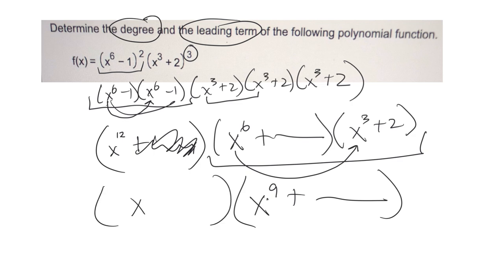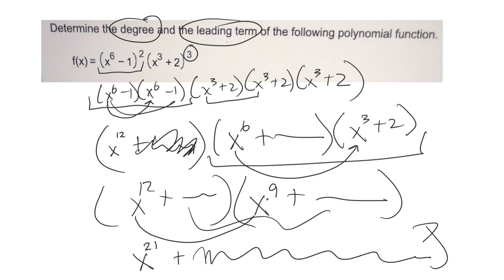And then on the front, I have x to the 12th plus some stuff. If I were to foil all that, I'd multiply these first and get x to the 21st plus, foiling all the other stuff, I'm going to get smaller terms as I go down.